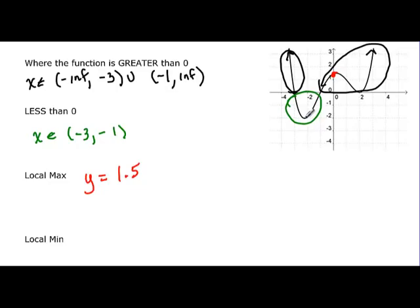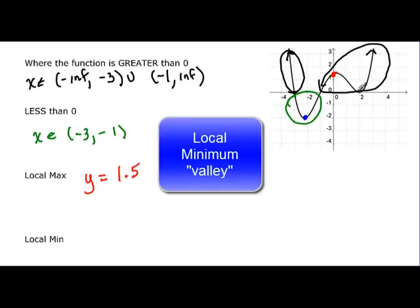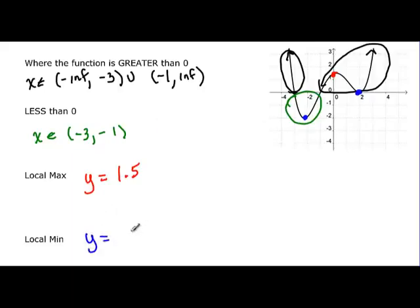And then we have local mins, and that would be this one here and this one here. There's two valleys. So y would be equal to, it looks like it's down at negative 2, down here at negative 2. And then up here it's at 0. Remember these are y values.